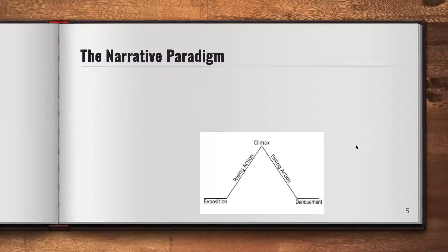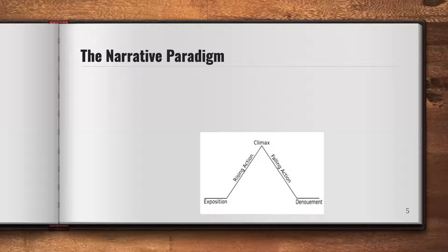The next thing I'm going to get to is the narrative paradigm. For those looking at the diagram I have up on the screen right now, it's probably bringing you some really terrible memories of high school English. Does anybody know what this diagram on the screen is? Andrew says the plot — thank you, Andrew. So this is a diagram for the plot of a story. When you were in high school, probably ninth or tenth grade, your teacher would give you this diagram and say: read this book — in my case it was Romeo and Juliet — and plug in the parts for exposition, rising action, climax, falling action, and denouement. This explains how a good story is put together.